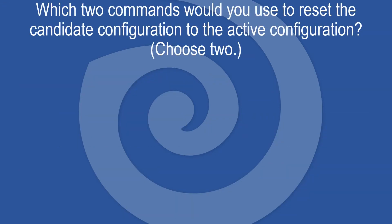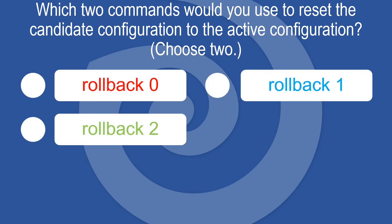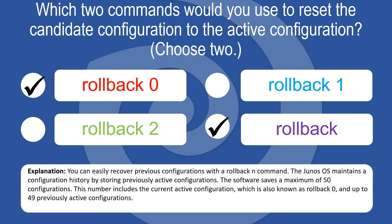Which two commands would you use to reset the candidate configuration to the active configuration? Choose two: Rollback 0, Rollback 1, Rollback 2, Rollback. The Junos OS maintains a configuration history storing previously active configurations. The software saves a maximum of 50 configurations, including the current active configuration known as Rollback 0, and up to 49 previously active configurations.